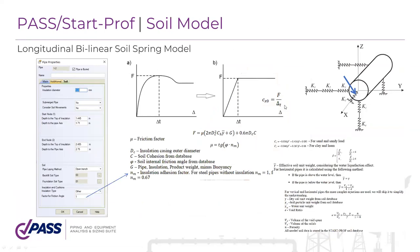The axial bilinear spring has a specific behavior diagram showing how the friction force is calculated, taking into account soil cohesion and soil internal friction angle. The depth depends on the pipe depth from pipe properties, and other properties come from the database. If you select the submerged pipe option, StartProf will automatically change the soil weight according to special equations and use the liquefied soil weight, changing the friction force along the pipeline. You can also specify a friction reduction factor — for example, for pipelines covered with a special polyethylene coating to reduce friction.